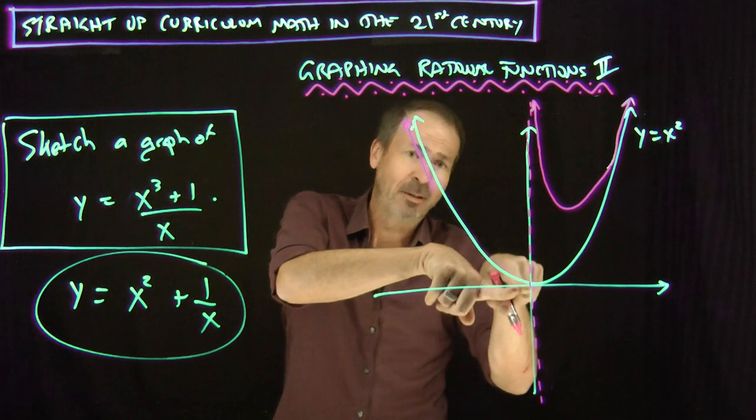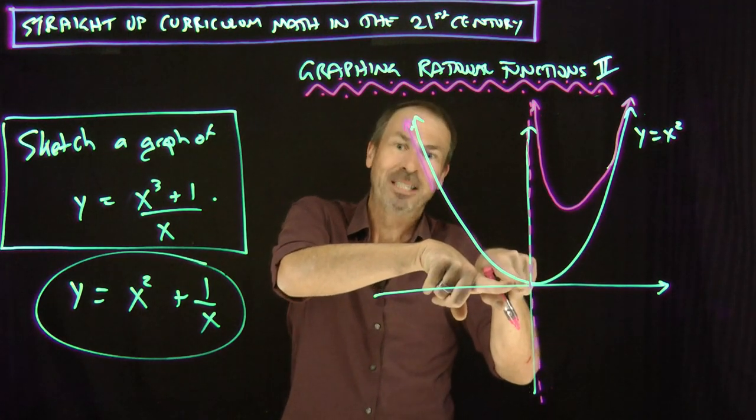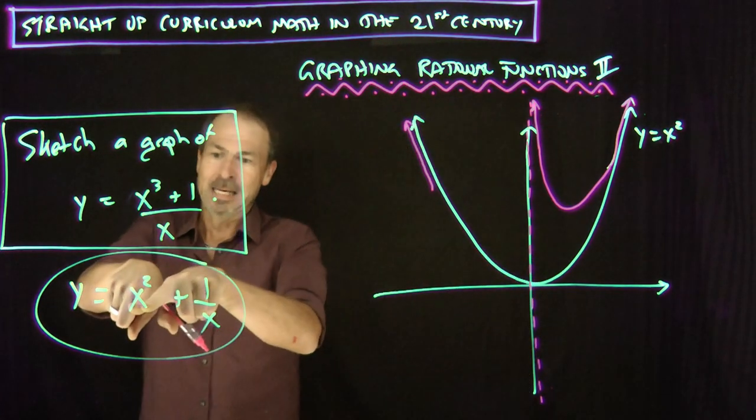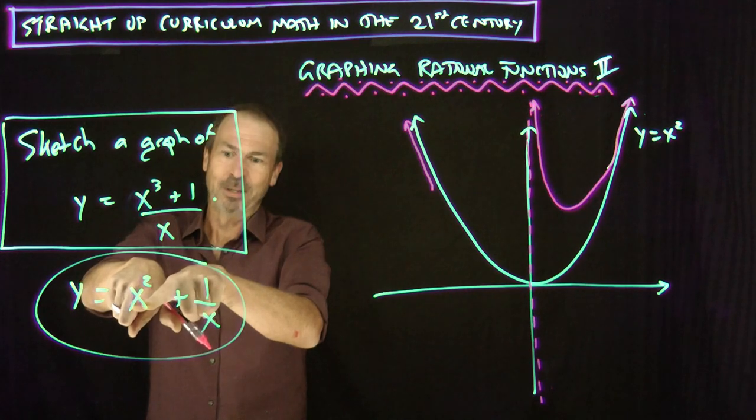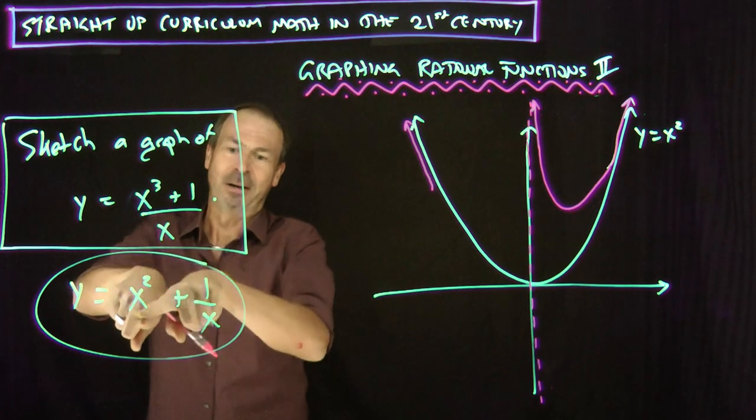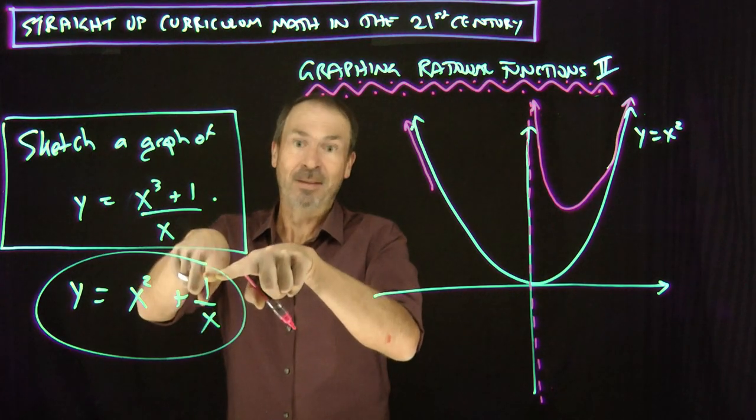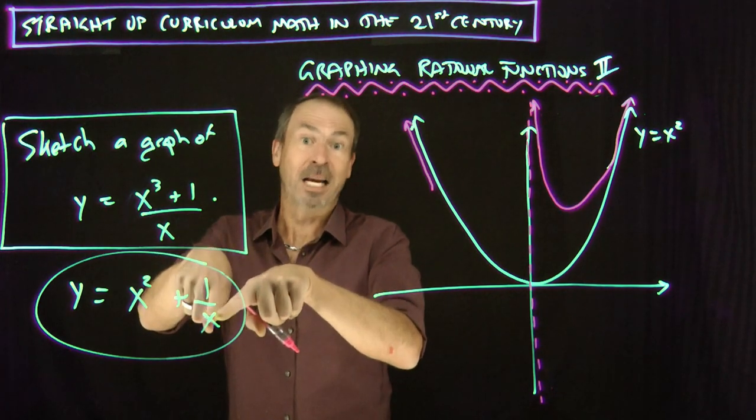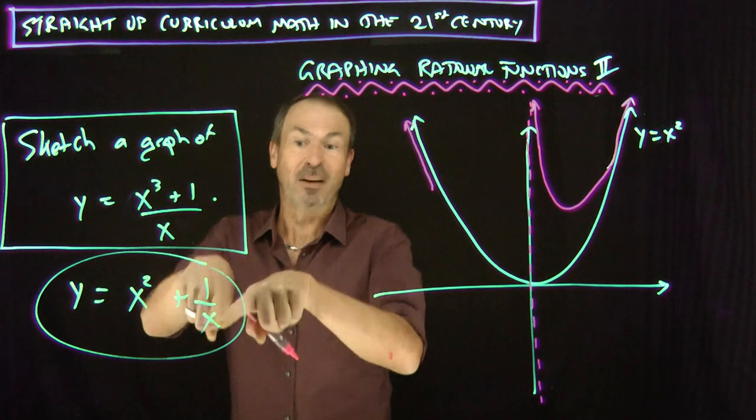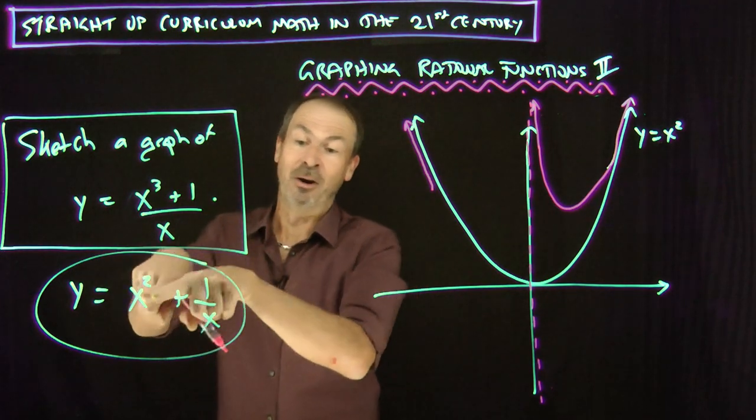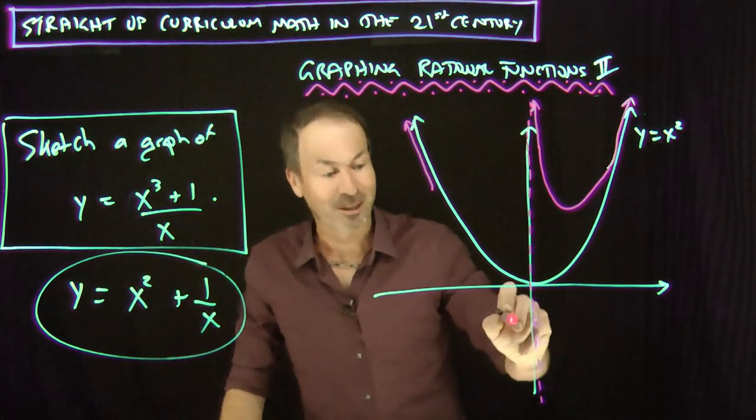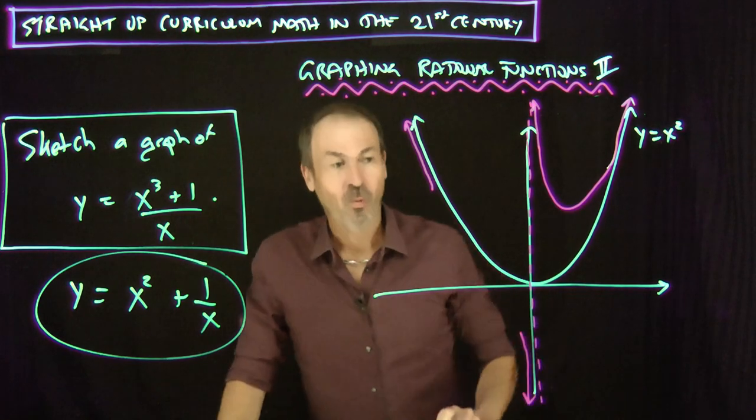Okay, what about just to the left of the danger zone? Like x equals negative 0.1, negative 0.01, negative 0.001. Negative 0.1 squared, negative 0.01 squared, negative 0.001 squared. All that would be really close to zero, plus 1 over negative 0.1, negative a tenth. 1 over negative 0.01, negative a hundred. Oh, negative a thousand, negative a million. It wants to be something really close to zero minus a big number. It really wants to go down. Whoa.